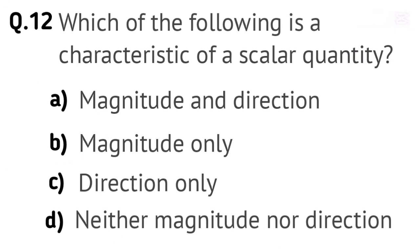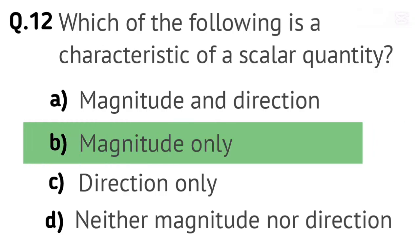Question 12. Which of the following is a characteristic of a scalar quantity? Options: A. Magnitude and direction. B. Magnitude only. C. Direction only. D. Neither magnitude nor direction. Right answer is B. Magnitude only.